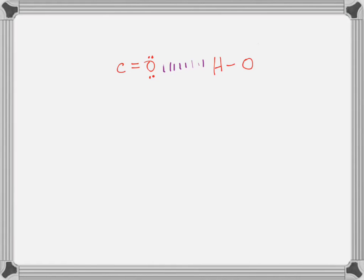Hydrogen bonding now? Yes. We have that polar covalent bond generating the dipole on our carbon-oxygen double bond. We have our polar covalent bond between the hydrogen and the oxygen, again giving us our dipole. We have a dipole-dipole. Within that interaction, do we have a hydrogen interacting with oxygen, nitrogen, or halogen? Yes, we do. So we do have hydrogen bonding in this case.